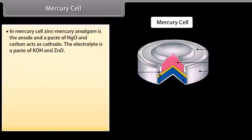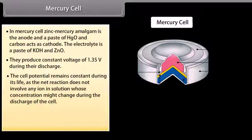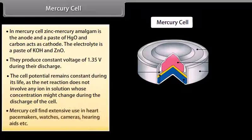Mercury cell: In mercury cell, zinc mercury amalgam is the anode and a paste of HgO and carbon acts as cathode. The electrolyte is a paste of KOH and ZnO. They produce constant voltage of 1.35 volt during their discharge. The cell potential remains constant during its life as the net reaction does not involve any ion in solution whose concentration might change during the discharge of the cell. Mercury cell finds extensive use in heart pacemakers, watches, cameras, hearing aids, etc.